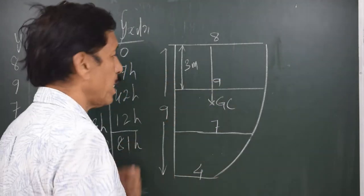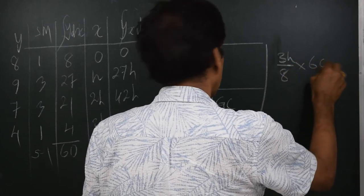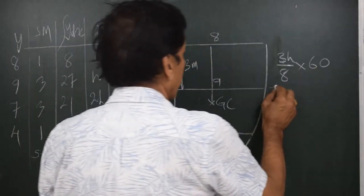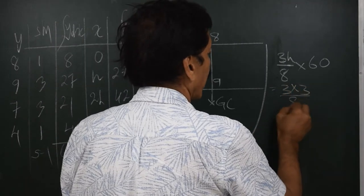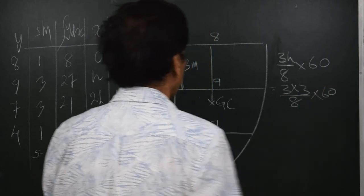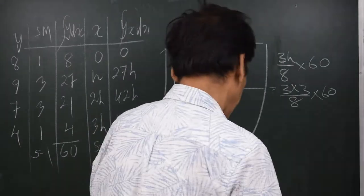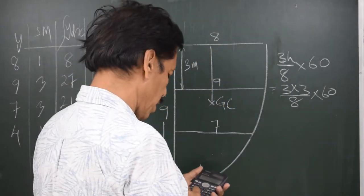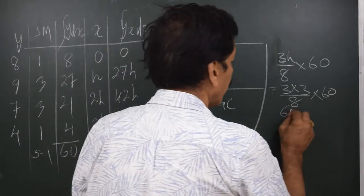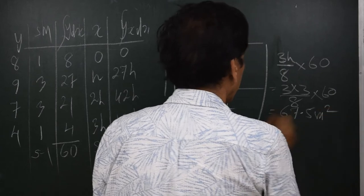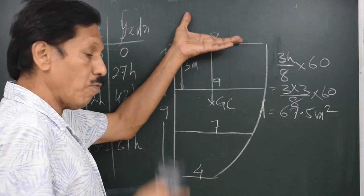The area of the bulkhead is (3h/8) × sum = (3h/8) × 60. With h equal to 3, that is (3×3/8) × 60 = 9×60/8 = 540/8 = 67.5 square meters.